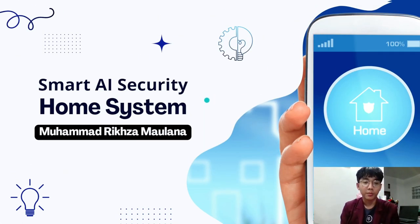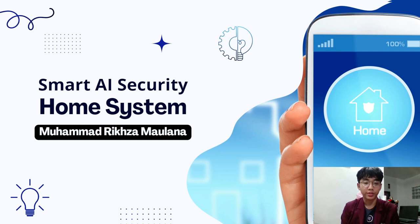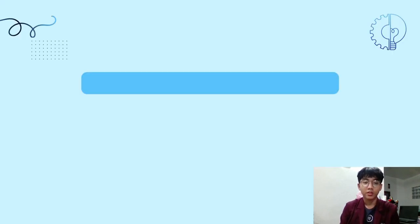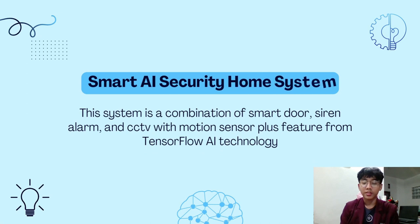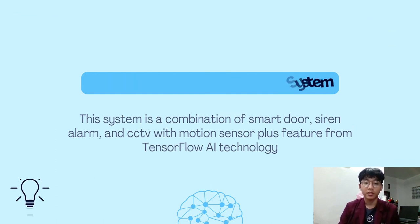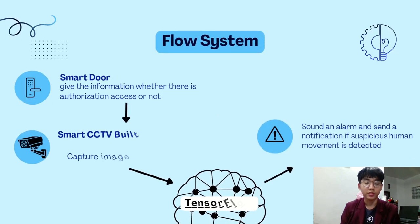Based on my group presentation in the last session, we have an idea about a Smart AI Security Home System. This system is a combination of a smart door, siren alarm, and CCTV with motion sensor, plus features from TensorFlow AI technology. And this is the flow of the system.